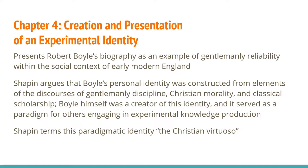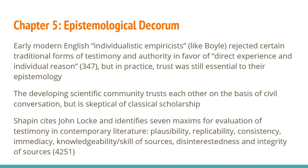Chapter 4, which everyone will be reading this week, is a detailed profile of Robert Boyle and how he exercised the credibility conveyed by his status to build a reputation that allowed his scientific innovations to be relied upon. Shapin argues that Boyle's personal identity was constructed from elements of the discourses of gentlemanly discipline, Christian morality, and classical scholarship. Boyle himself is a creator of this identity, and it served as a paradigm for others engaging in experimental knowledge production. Shapin terms this paradigmatic identity the Christian virtuoso. This chapter also goes into the ways in which early experimental scientists negotiated skepticism of traditional sources of knowledge and scholarly practices with trust in the other members of their community — in this case, the Royal Society of London. Shapin identifies seven maxims from various sources in early modern English literature that allowed gentleman scientists to evaluate testimony for truthfulness.